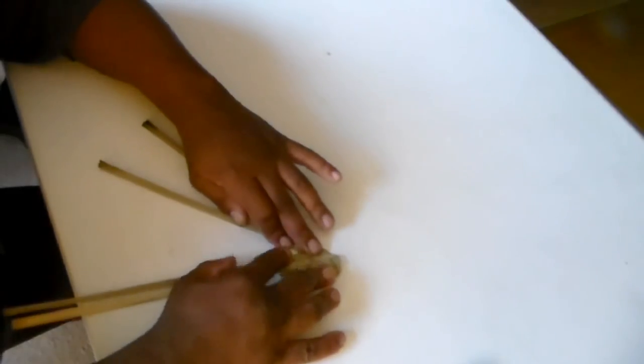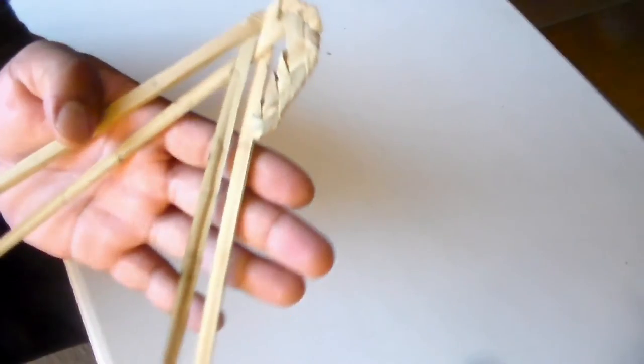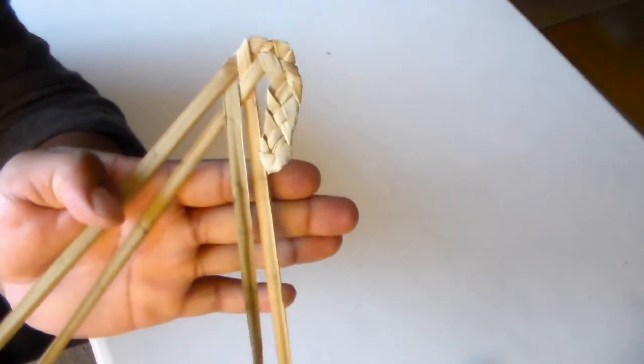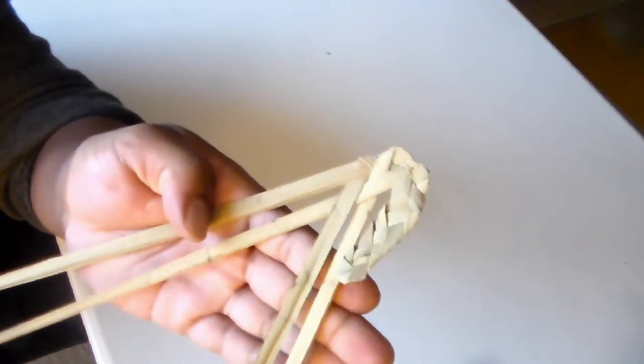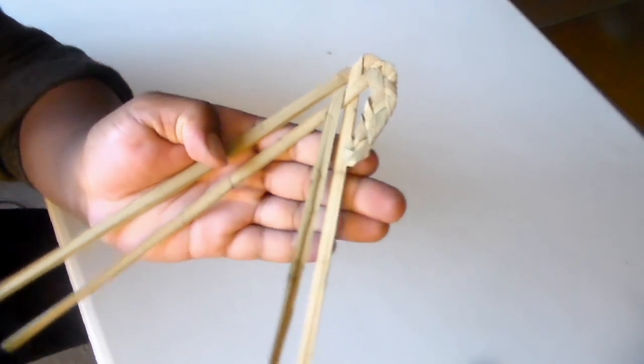So essentially, this is the configuration that you end up with when you do your turn or your bend with this two-leaf, four-strand plate configuration. So this is where you're at.